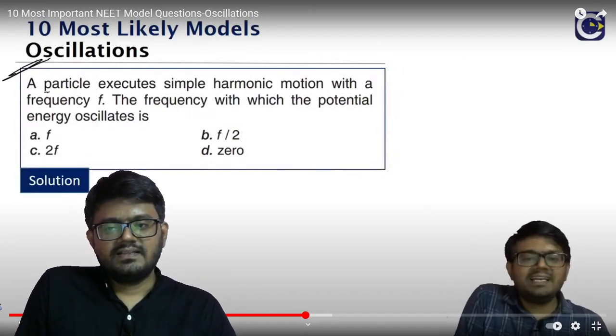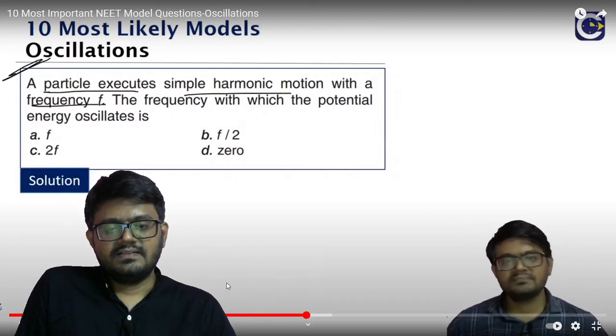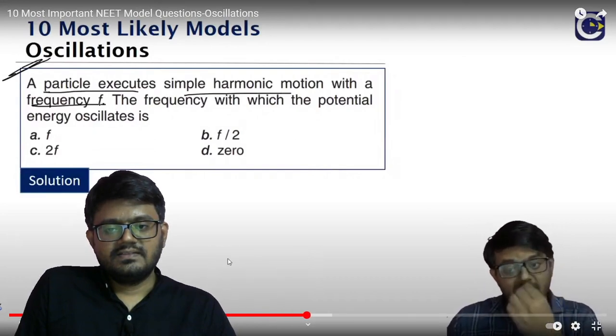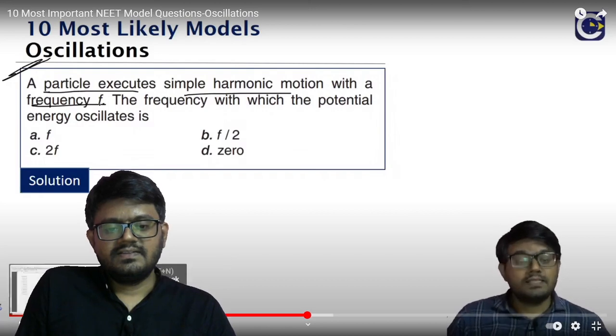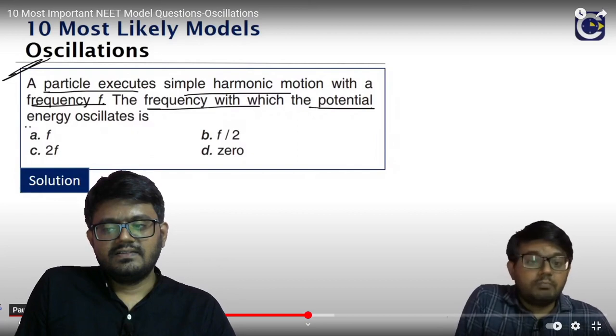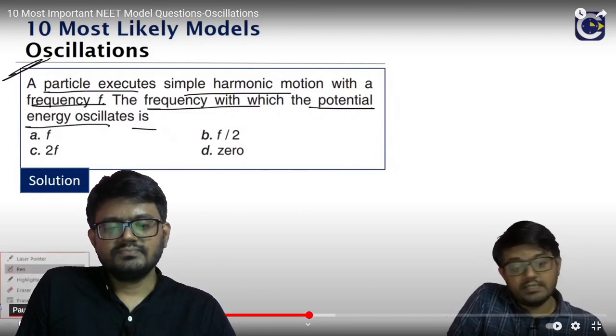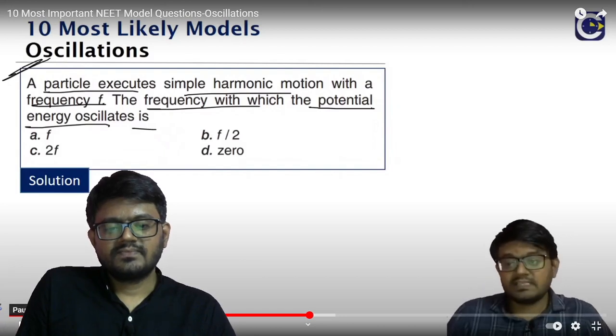A particle executes simple harmonic motion with the frequency f. And now what is the frequency of the SHM f? The frequency with which the potential energy oscillates, the frequency with which the potential energy will be oscillating? First number.